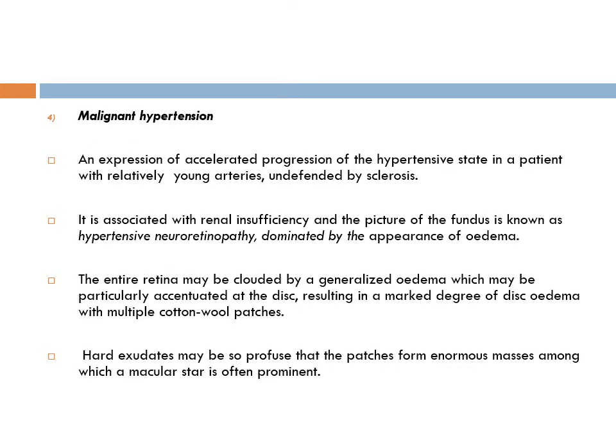The fourth category has the worst prognosis: malignant hypertension, an expression of accelerated hypertension where systolic exceeds 220 and diastolic exceeds 140. Young arteries not protected by sclerosis are subjected to this extreme pressure elevation, which is associated with renal insufficiency. The fundus picture is known as hypertensive neuroretinopathy, dominated by edema.